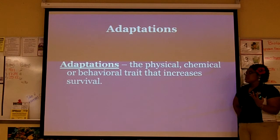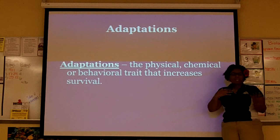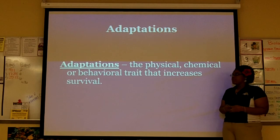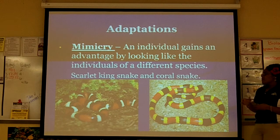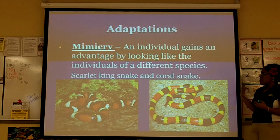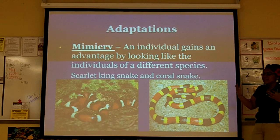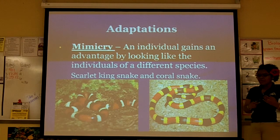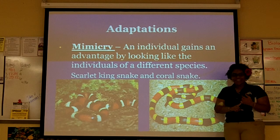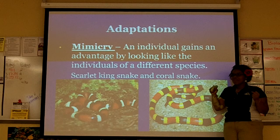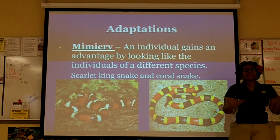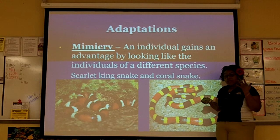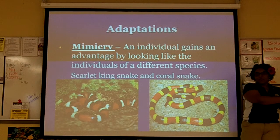Organisms come to adaptations. An adaptation is a physical, chemical, or behavioral trait that increases one's ability to survive. There are different types. Mimicry is one, where you have an advantage because you look like an individual of a different species — like the Scarlet Kingsnake and the Coral Snake, or the Monarch Butterfly and its look-alike. One tastes really bad, and because the other looks like it, no one's going to eat it. That's an advantage because you look like something no one wants to mess with.